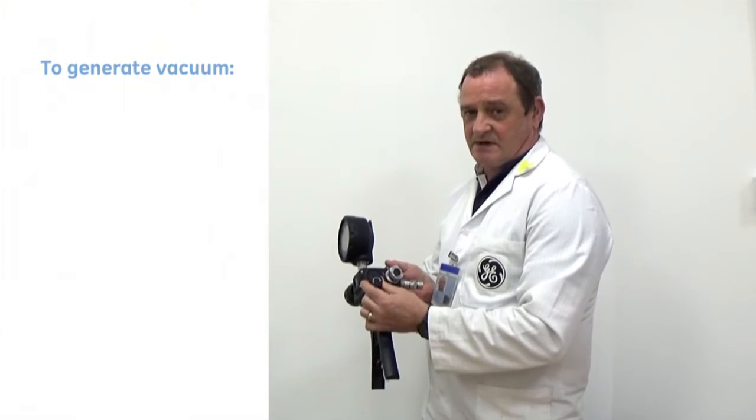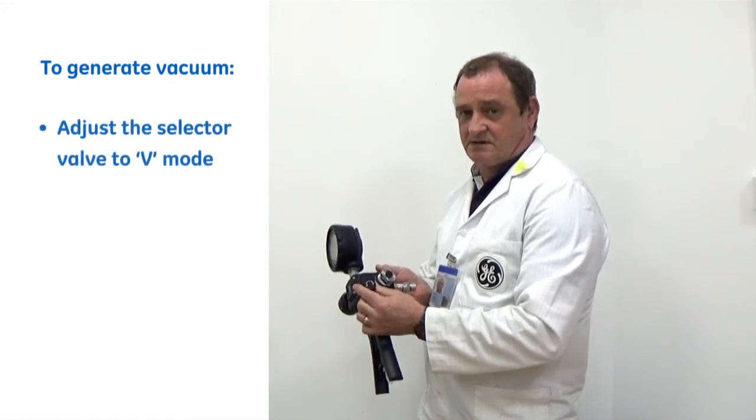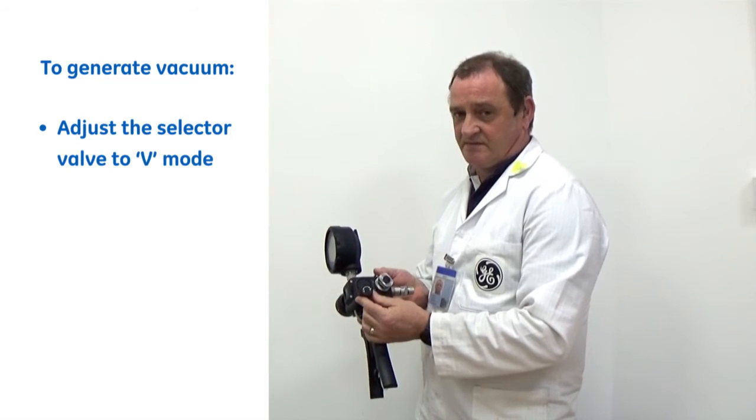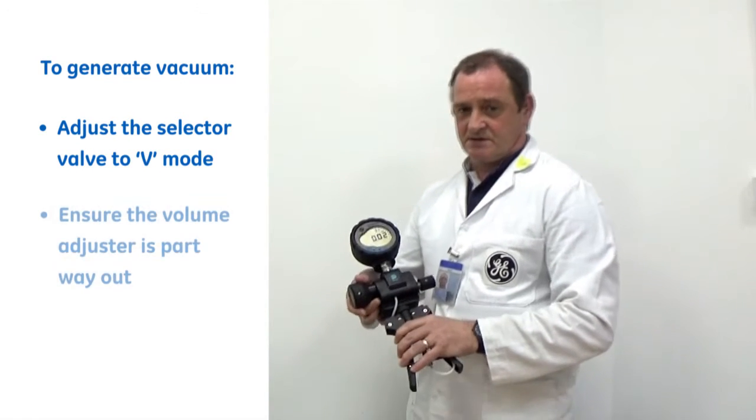To generate a vacuum, we rotate the vacuum selector into the vacuum position indicated by the V, and with the volume adjuster part way out.